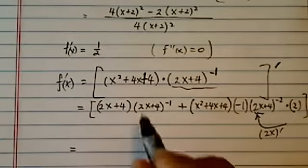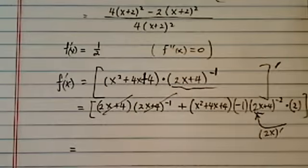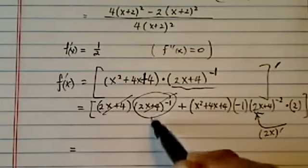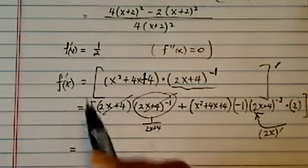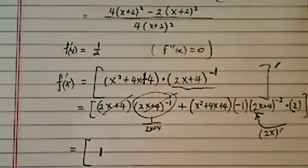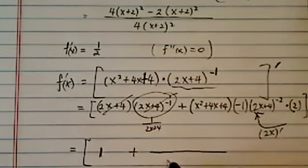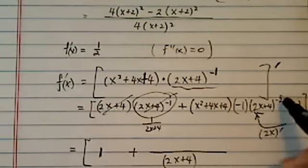This one cancels out because this term is really 1 over 2x plus 4. So we have a 1 for the first term plus, let's see what we have for the second one. We have a (2x plus 4) on the bottom. This is minus 2 power here.